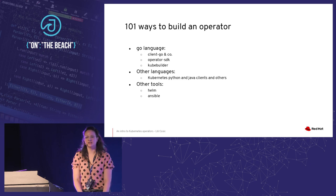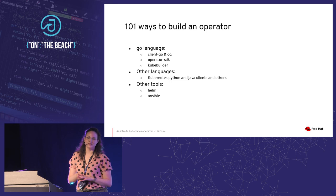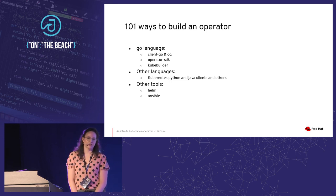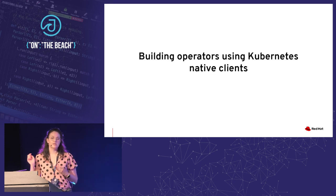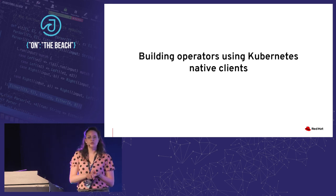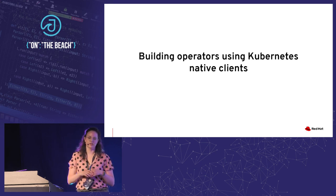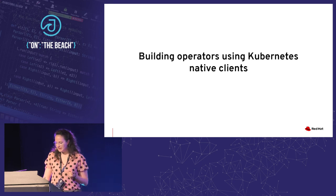As Kubernetes is not opinionated, there are 101 ways of building an operator. We'll look at three main ones: client-go, Operator SDK, and Kubebuilder. There are also other language clients you can use to communicate to the Kubernetes API — Java, Python, JavaScript, etc. Most of them are under the Kubernetes org. There is also other tooling like Helm and Ansible.